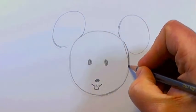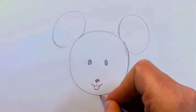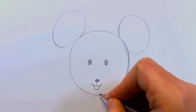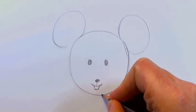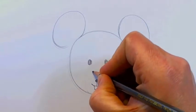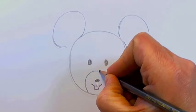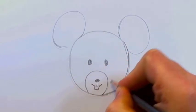And much like the bear and the lion, I like putting a circle around our mouse for his muzzle. So you can do that as well.